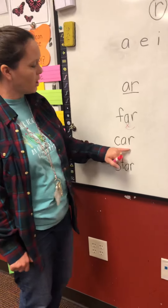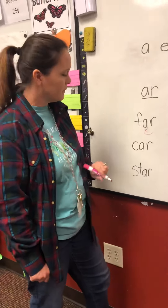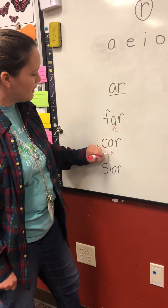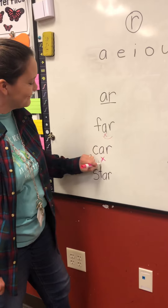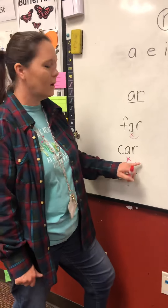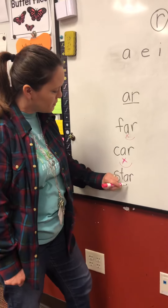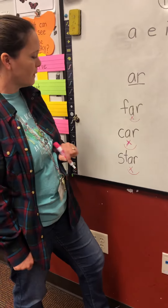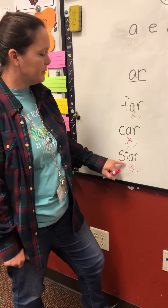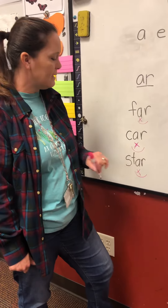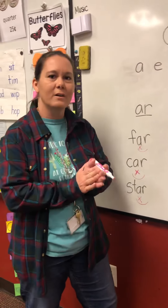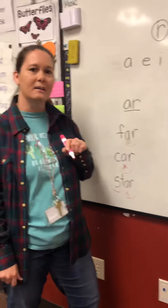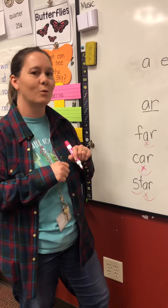Alright, let's mark the word car. We mark our vowel with an X, and then we arc our diphthong sound. Same with this word star. Now star has a blend in it. S and T are two consonants that come together to make two sounds. So we also arc the ST in star, and we've talked about that before.